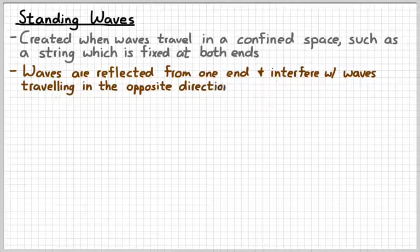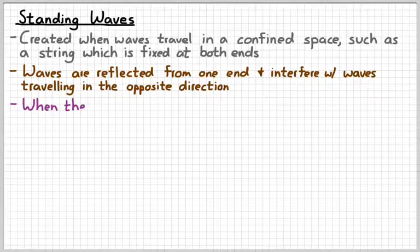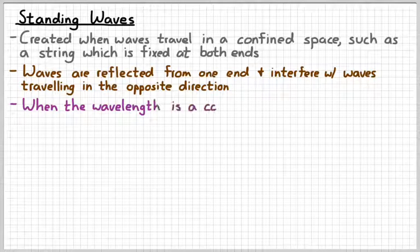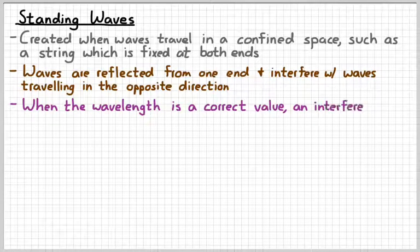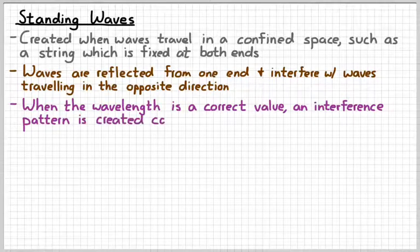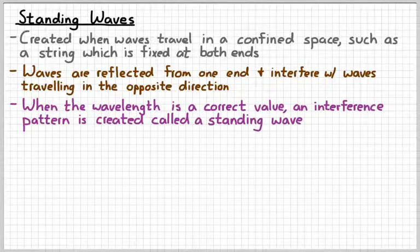So when you pluck a guitar string, waves travel down to the end and they reflect back. They interfere with waves which are reflected from the other end. So when we have waves whose wavelength is a correct value — which is what we're going to spend our time learning about today — you get an interference pattern which is referred to as a standing wave.